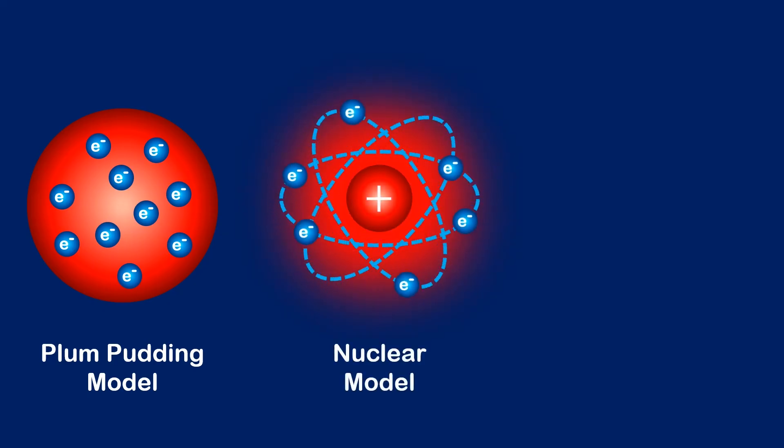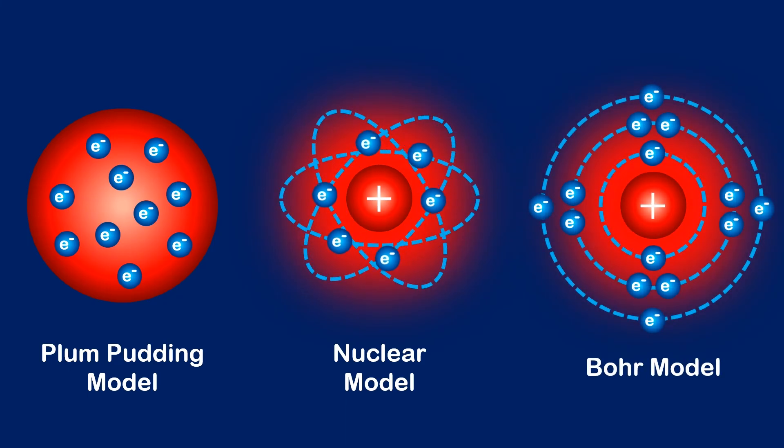So to summarize, JJ Thompson developed the plum pudding model with electrons held in a region of positive charge. Rutherford's alpha scattering experiment led to the nuclear model with the electrons orbiting the nucleus like planets around the sun. And Bohr refined the nuclear model by placing the electrons in shells or energy levels.